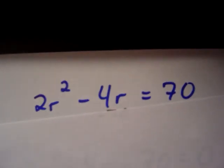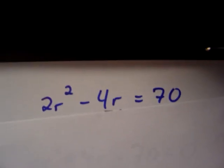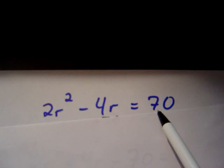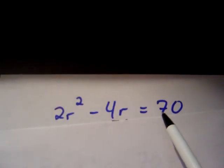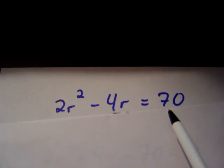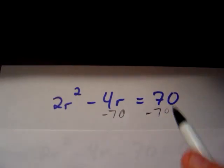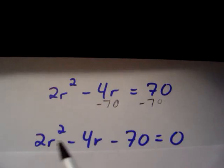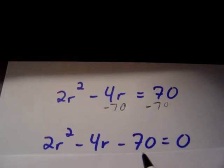Moving right along to our final example, we have the equation 2r squared minus 4r equals 70. You may notice that we do not have a trinomial equal to 0 — we have two terms equal to 70. Since we need to apply the zero product property, we need the whole equation equal to 0. We can subtract 70 from both sides, giving us 2r squared minus 4r minus 70 equals 0.